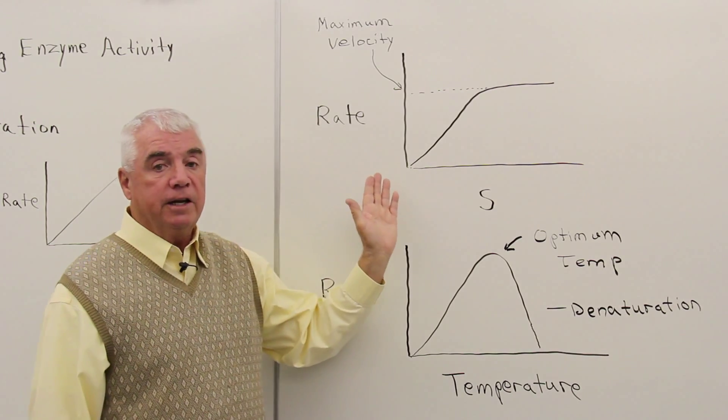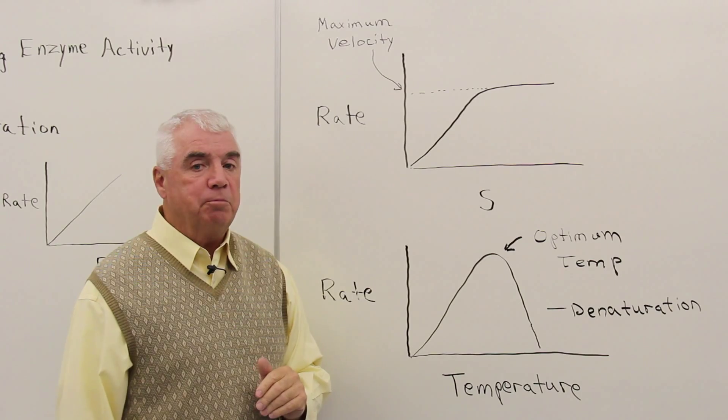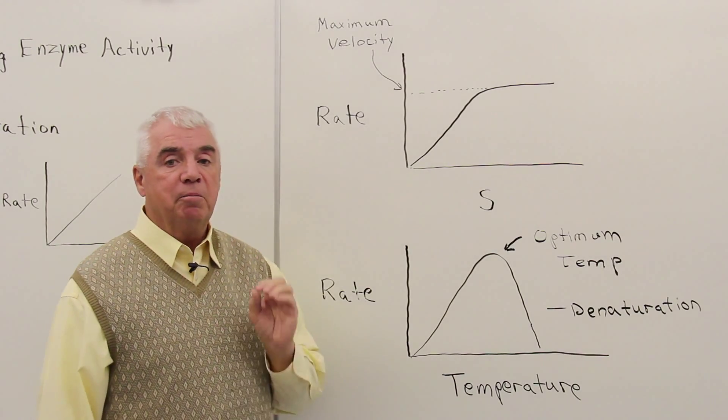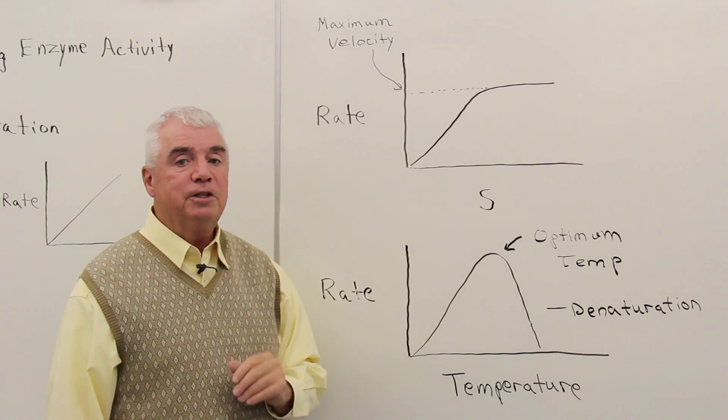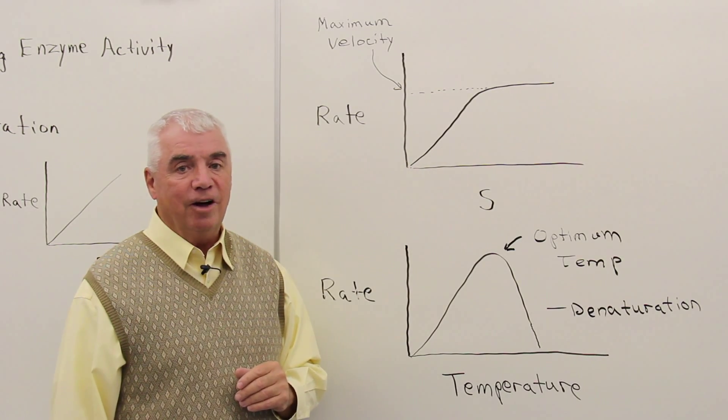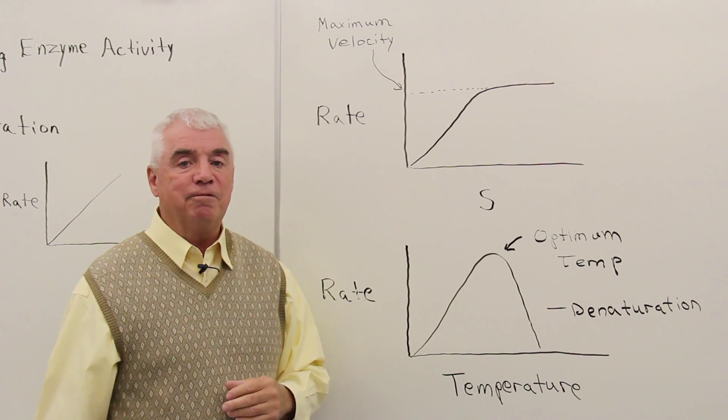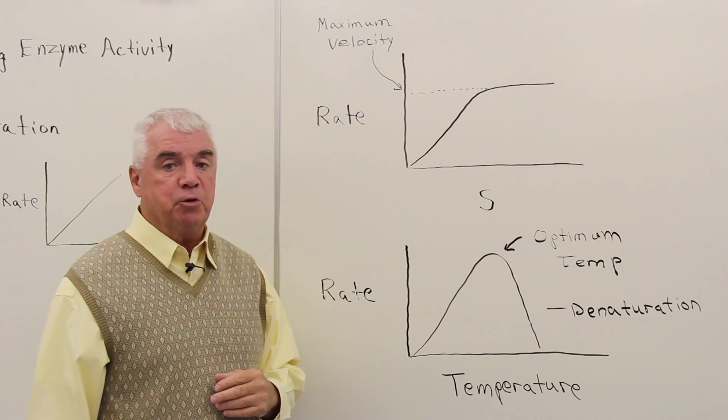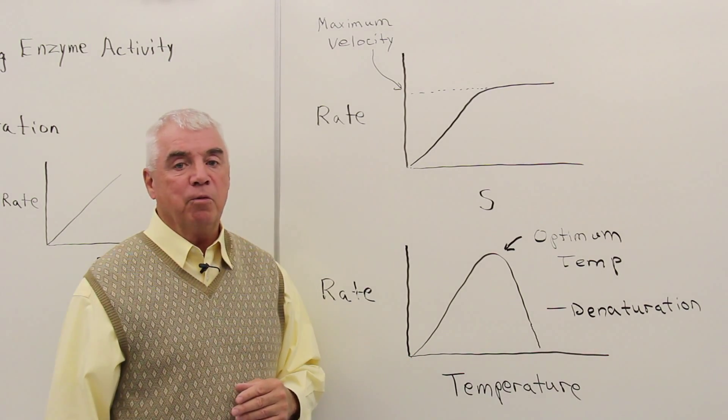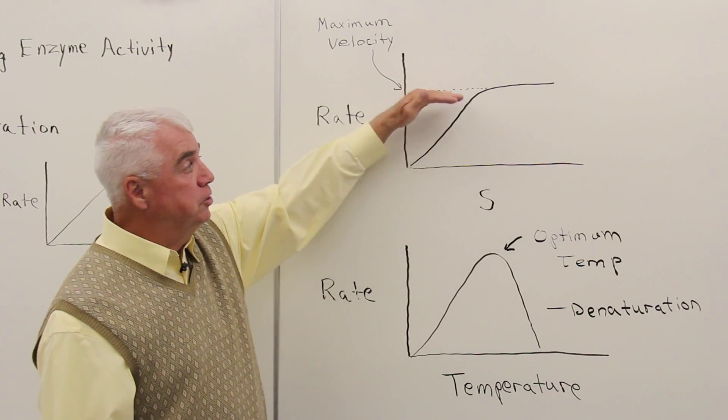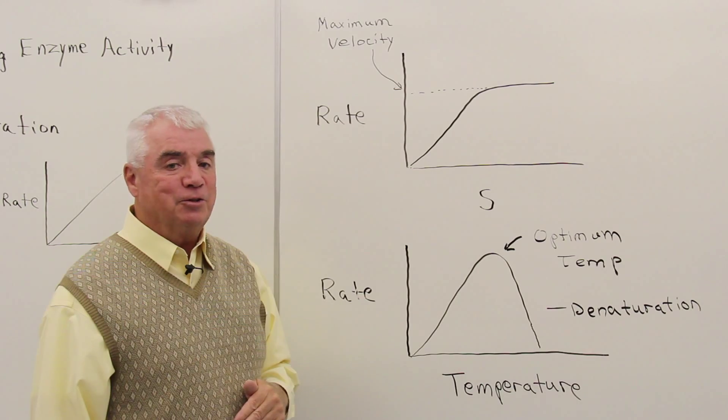Well, in this experiment, we're varying substrate concentration, but enzyme concentration is fixed. There's a certain number of active sites on that fixed amount of enzyme. And once all of those active sites are occupied by substrate, even though there's more substrate, the enzyme can't work any more efficiently. So it plateaus, and we've reached that maximum velocity.